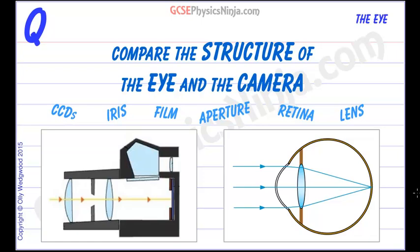Compare the structure of the eye and the camera. We've got some key words here to help us in our comparison and in a moment we'll make a table to summarize the differences and the similarities.